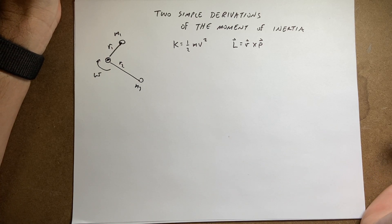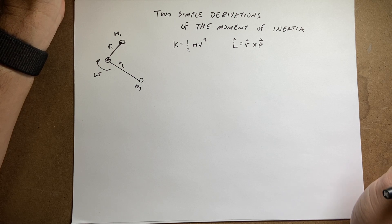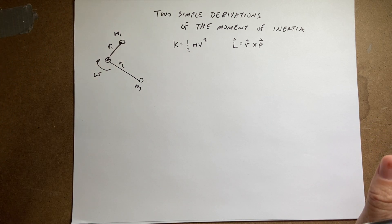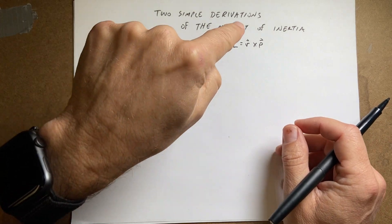So I want to show you a kind of not a full derivation of the moment of inertia, but it kind of helps you understand what's going on with the moment of inertia. And I'm going to look at this in terms of the kinetic energy and the angular momentum.